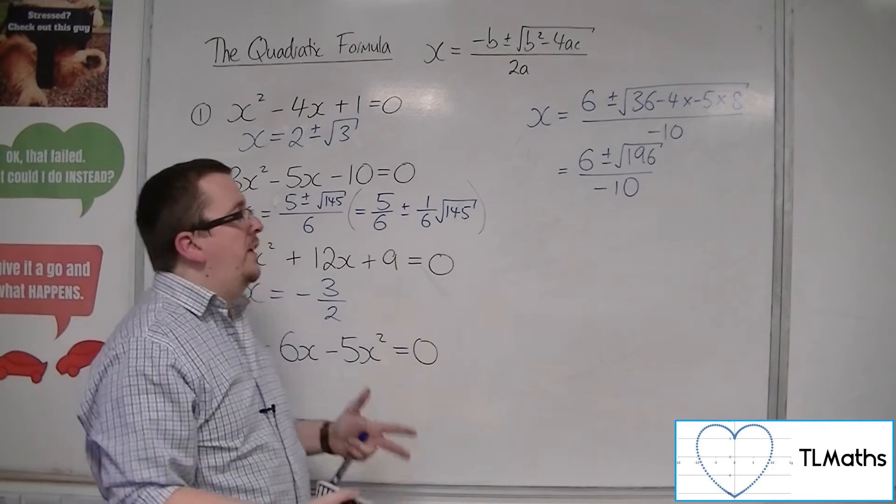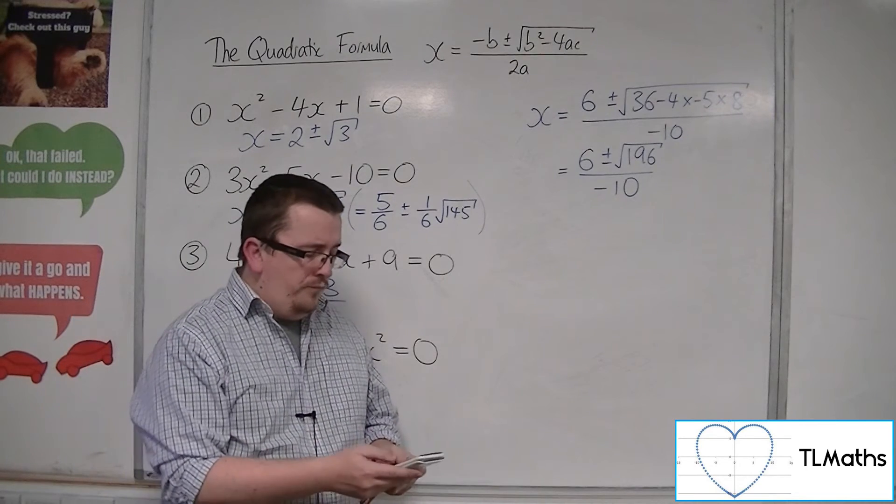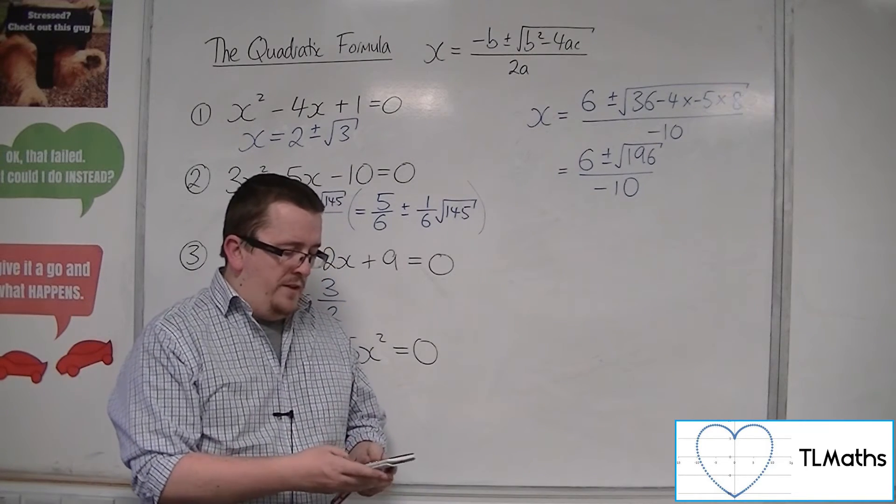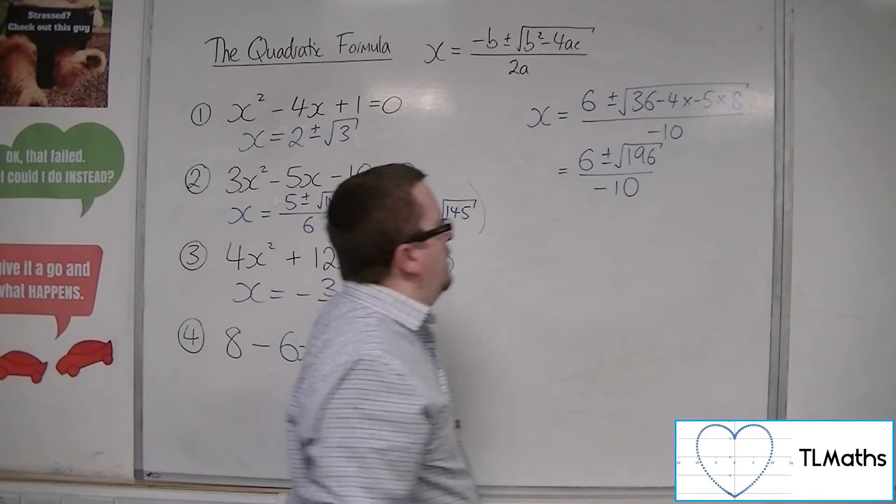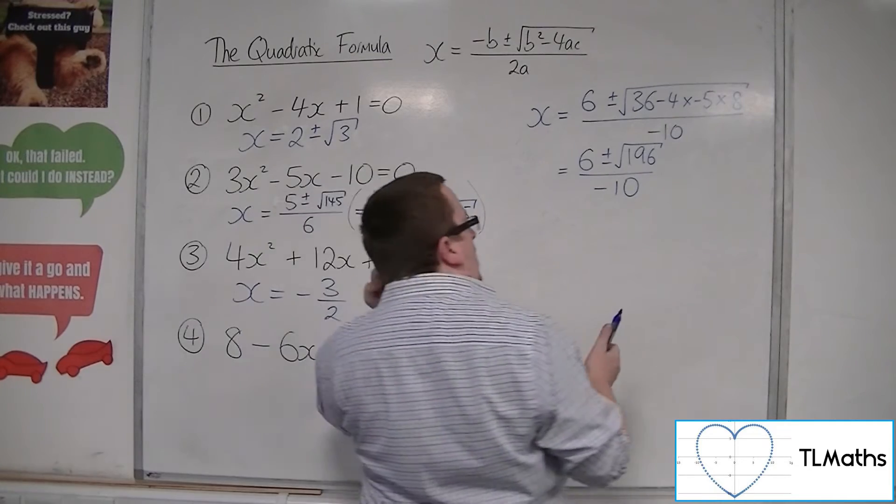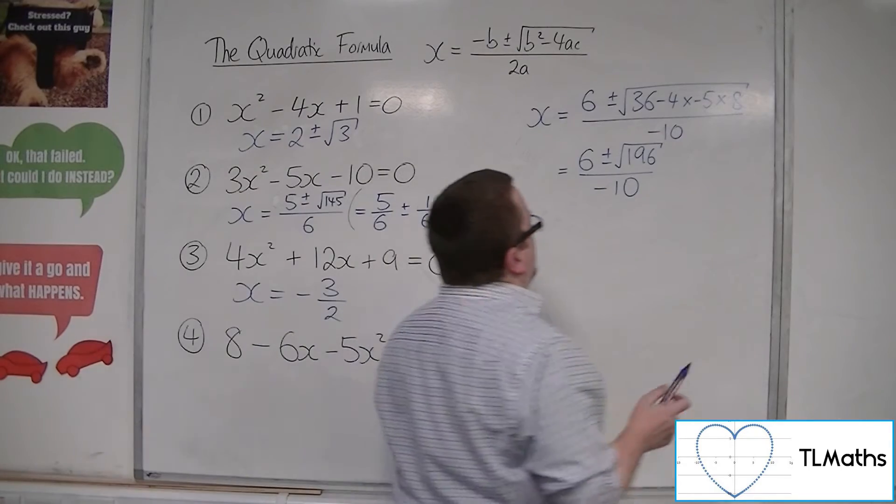So, 196, I know 4 can go in it, so square root 196, ah, 14. Okay, so maybe I should have spotted that, but that's me not remembering my 14 times table.